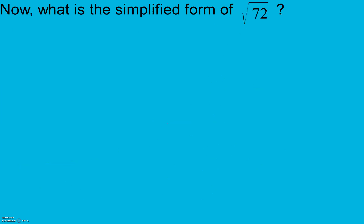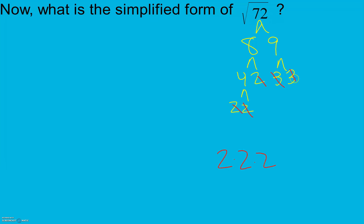Now let's try the square root of 72. We break it down: 8 times 9. 8 is 4 times 2, which is 2 times 2 times 2. 9 is 3 times 3. If you're not sure, since 72 is even, you can start with 2 and divide down, then try 3, then 5 — try your prime factors. So here I have three 2s and two 3s inside the square root.